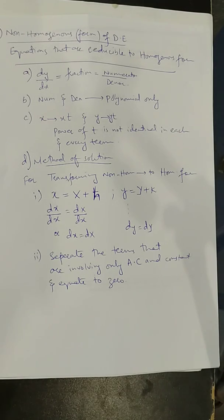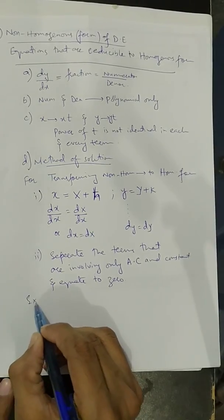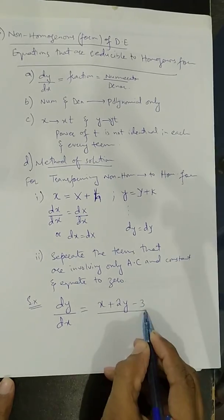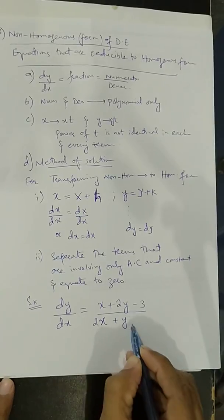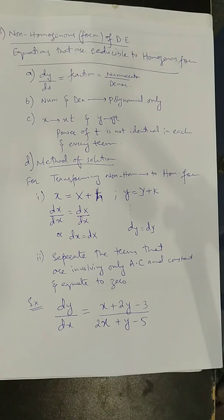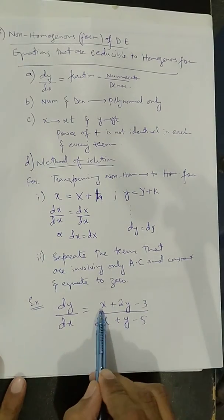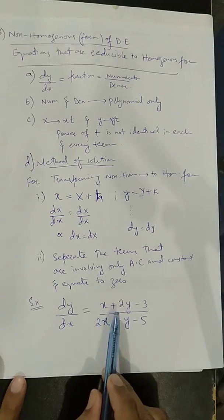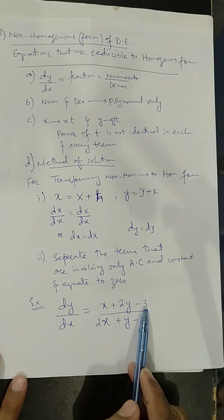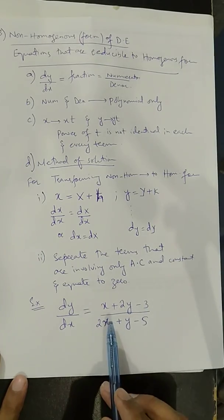Let's start with an example. Suppose we have dy/dx equals (x + 2y − 3) divided by (2x + y − 5). The first condition is satisfied — it is in fractional form with numerator and denominator as polynomials. The third condition: when you substitute x by xt and y by yt, the terms x and 2y carry t to the power one, but the constant term −3 carries t to the power zero. So the power of t is not identical in each and every term, whether in the numerator or denominator.